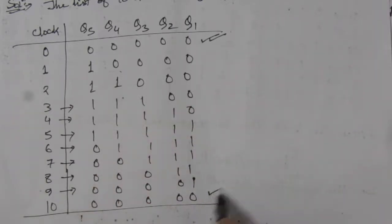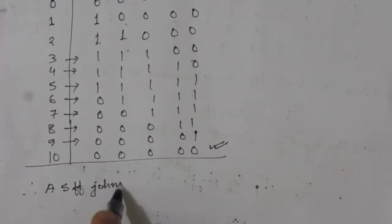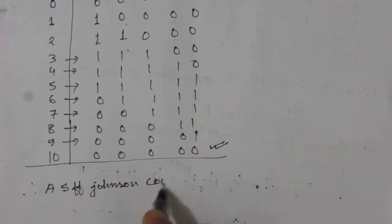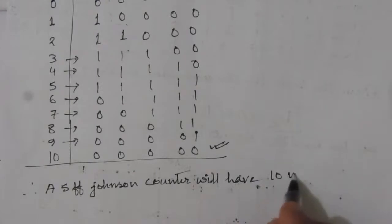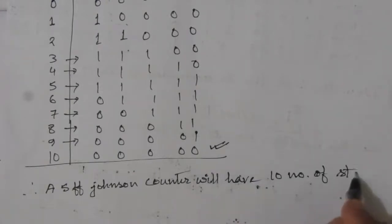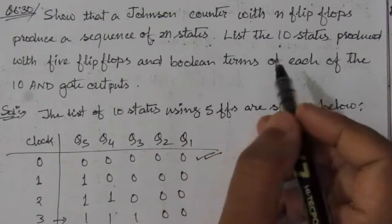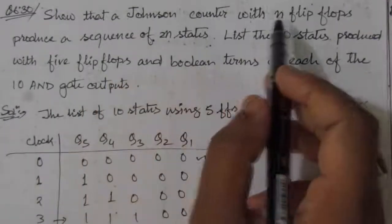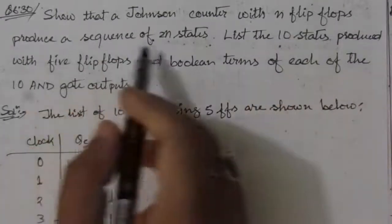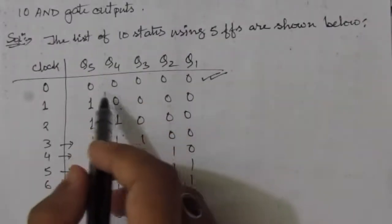After 10 clock cycles we have returned to the same initial state. Therefore a five flip-flop Johnson counter has 10 states, confirming that a Johnson counter with n flip-flops produces a sequence of 2n states.